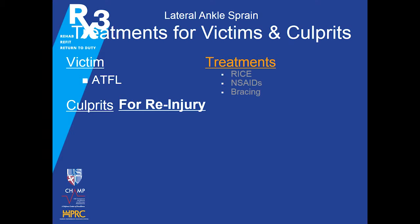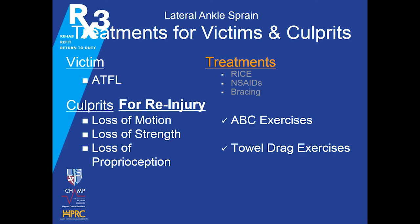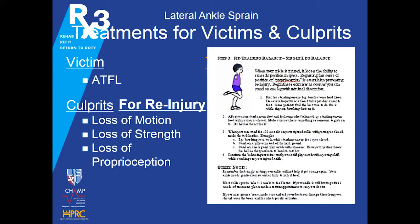For culprits after acute treatment: for loss of motion, do ABC exercises — draw the alphabet on the floor with your toes. For loss of strength, do towel drag exercises. For loss of proprioception — a very important key — do balance drills to get your balance back. This handout is available on DCO and goes through range of motion exercises, towel drag for strength, and proprioceptive exercises on the back. People often do the other things but forget to get their sense of balance and proprioception back.